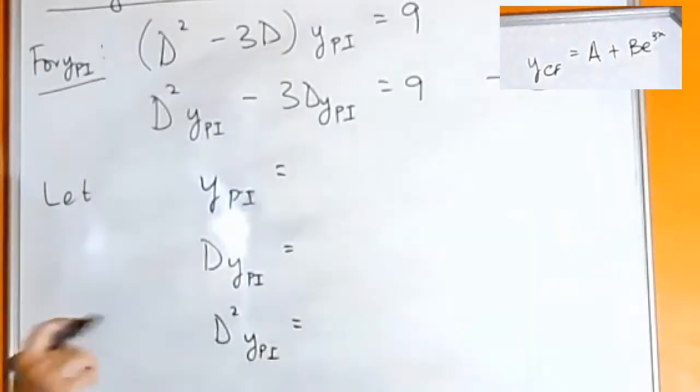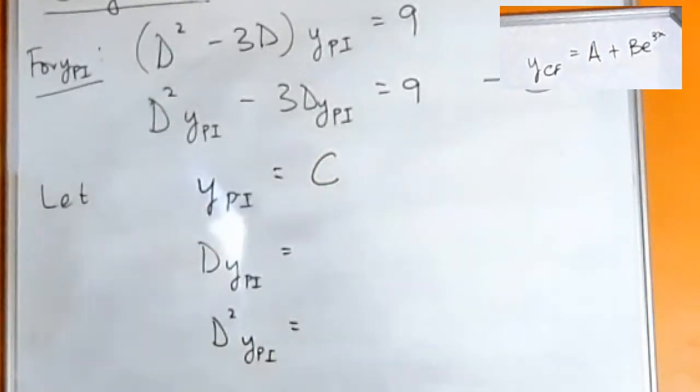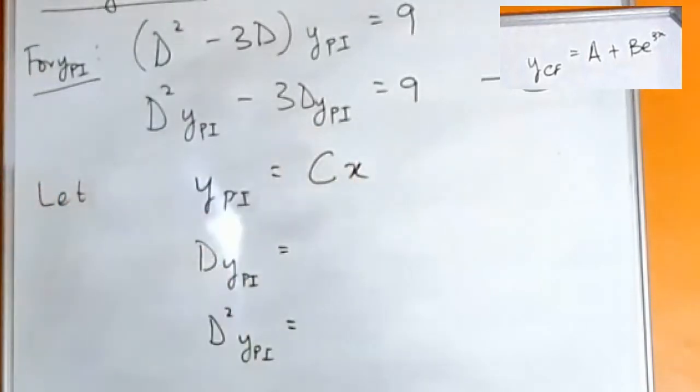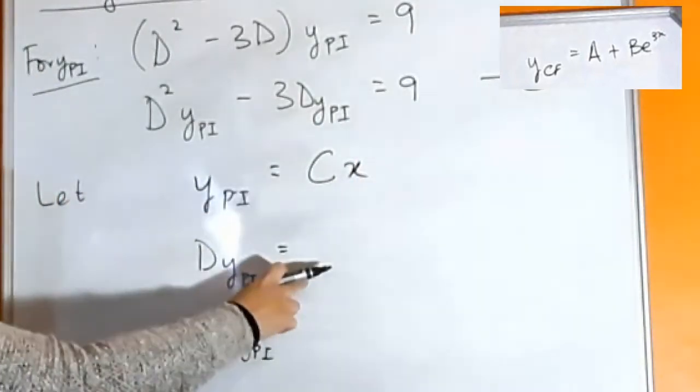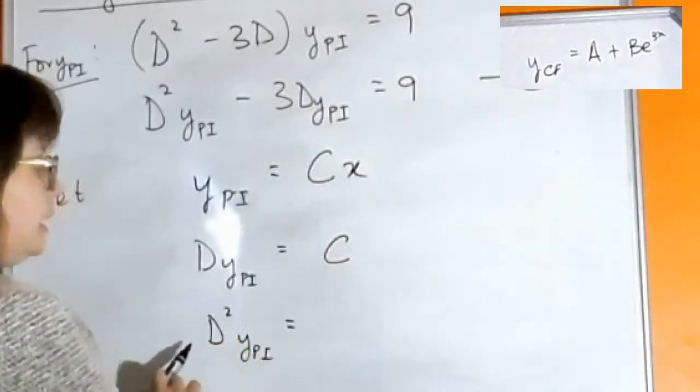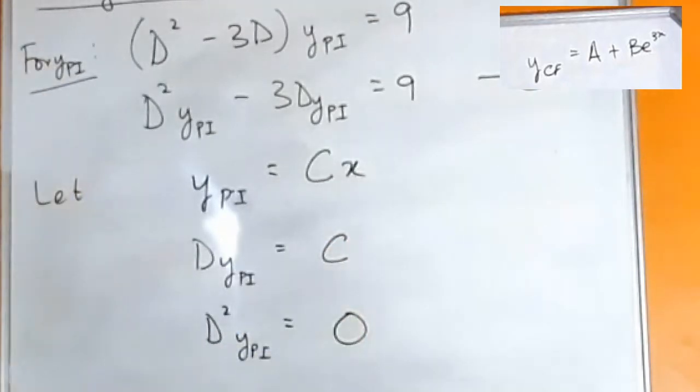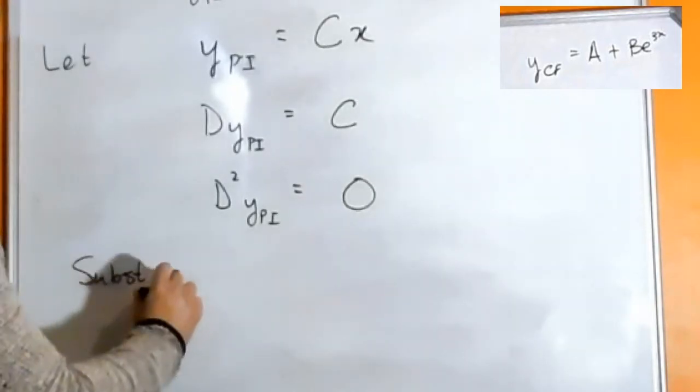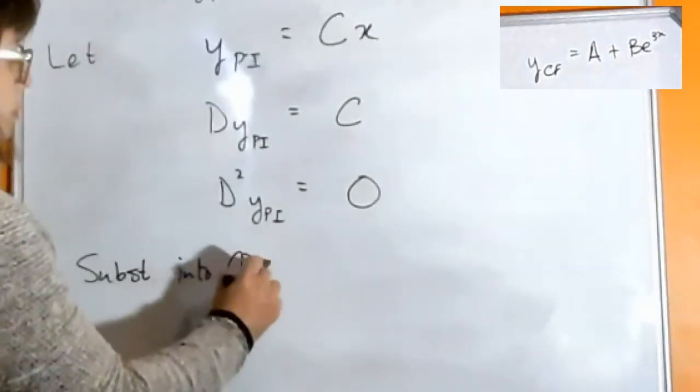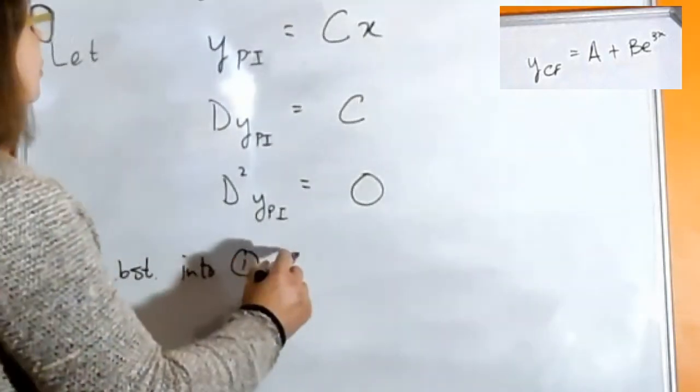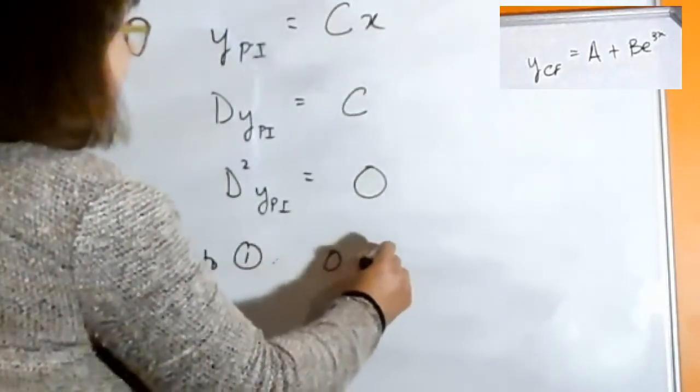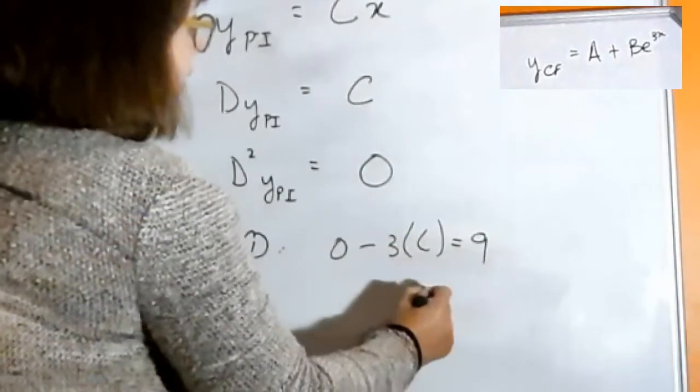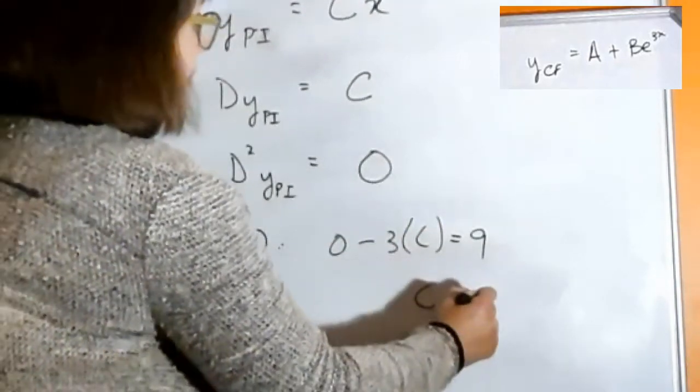Let's try instead of a constant value, let's try a linear function like that. So your first derivative is now going to be c and your second derivative is going to be zero. So again we substitute into one, and you get zero minus three times c equals nine.